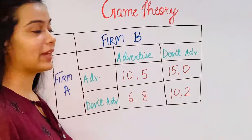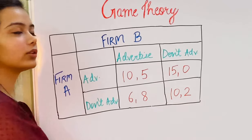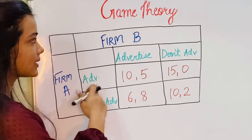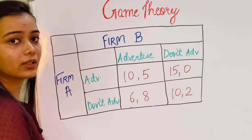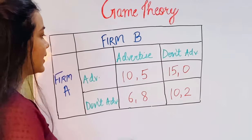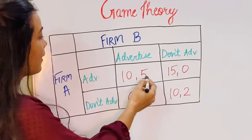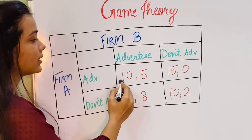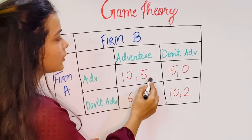Here we have two firms, Firm A and Firm B, and they have two options: either to advertise their product or not to advertise. A payoff is any value associated with a possible outcome. If Firm A advertises and Firm B also advertises, the payoff to Firm A is 10 and the payoff to Firm B is 5.